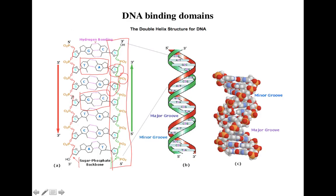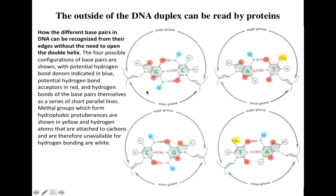A regulatory protein interacting with the DNA will either interact with the nitrogenous bases — where certain atoms on the bases allow protein interaction — or it can also interact with the sugar-phosphate backbone. Let's look at four different possible scenarios of how nucleotides are paired inside the DNA. You can have GC, CG, AT, or TA base pairs. At the top is the major groove, and at the bottom is the minor groove.